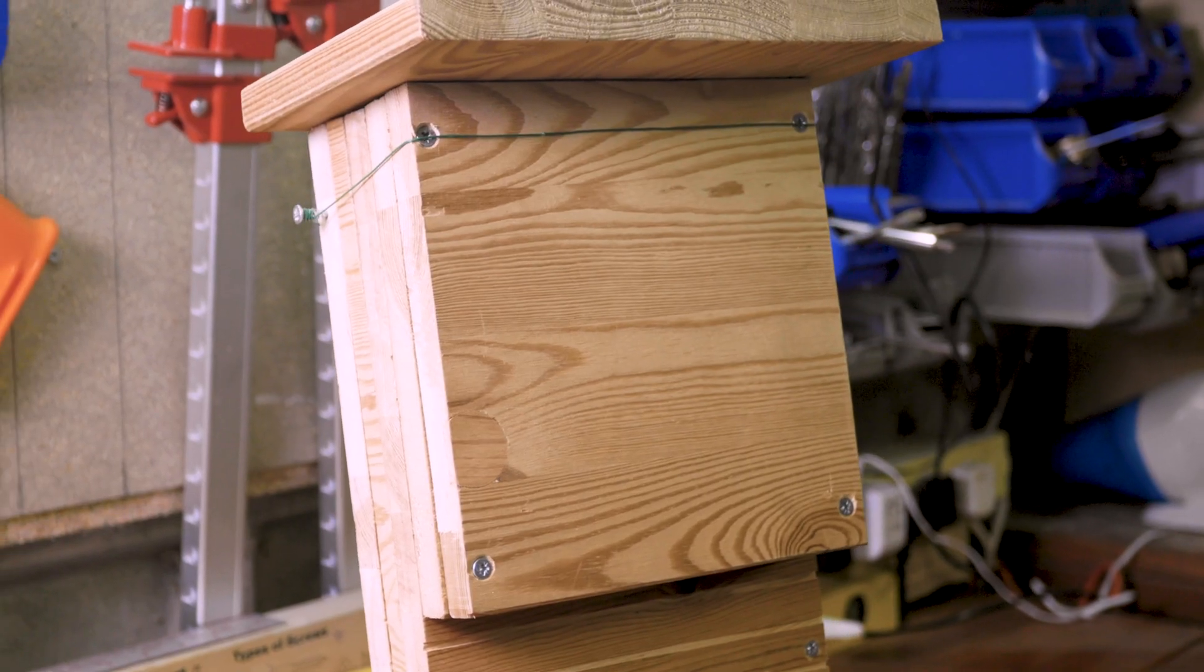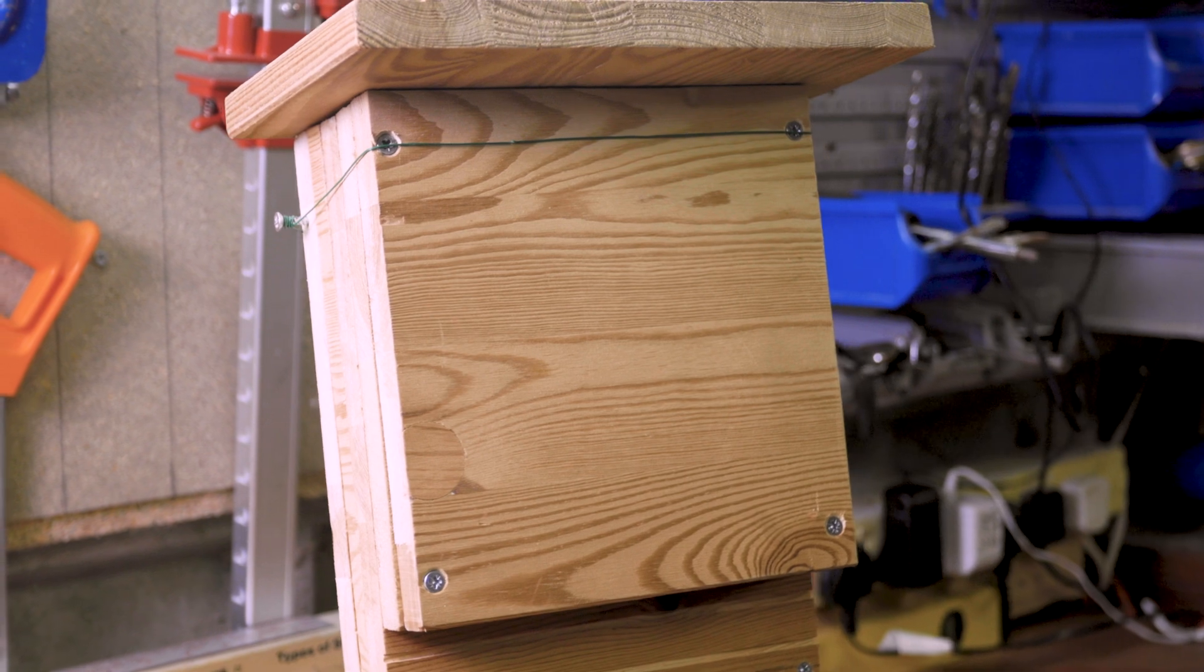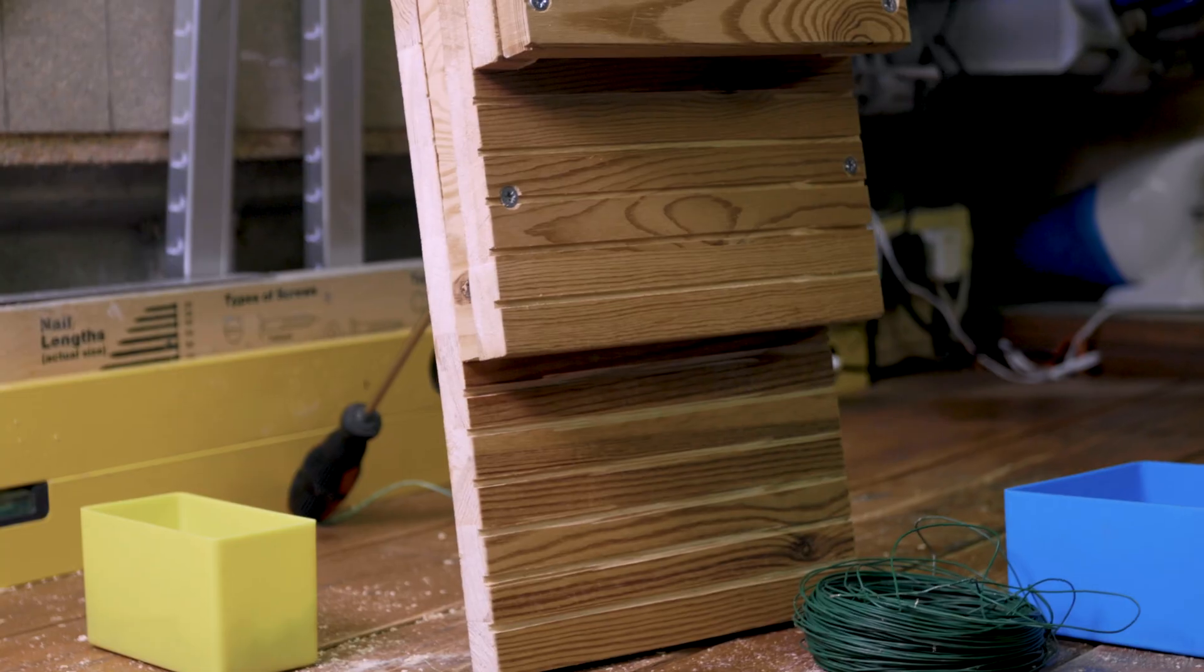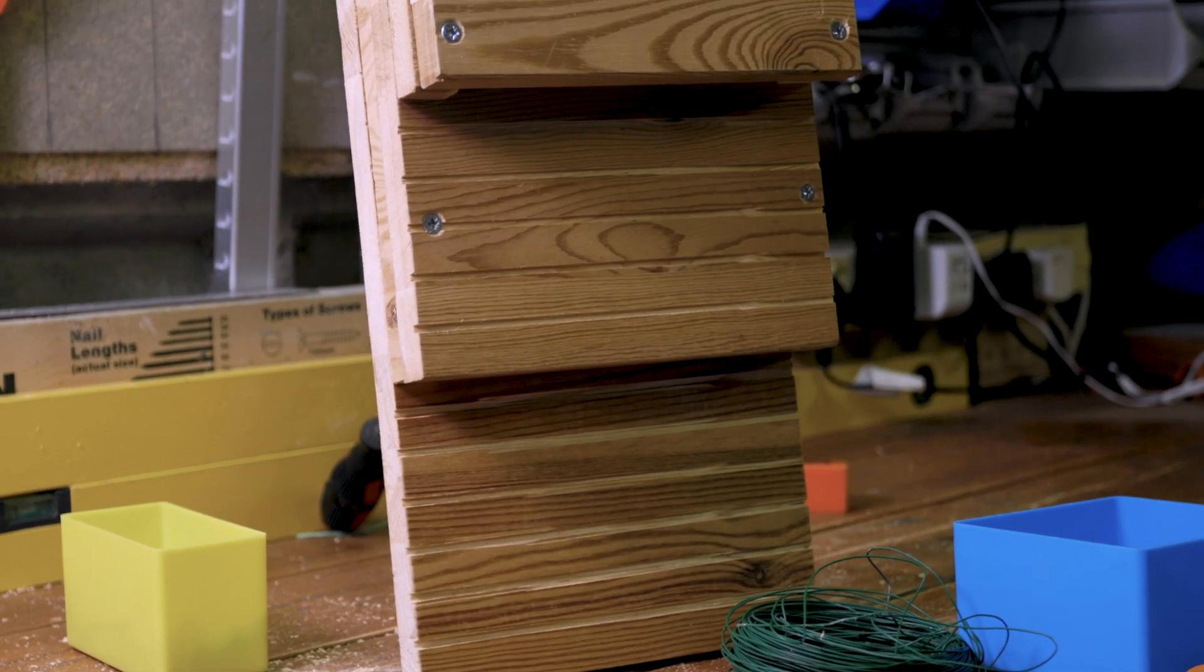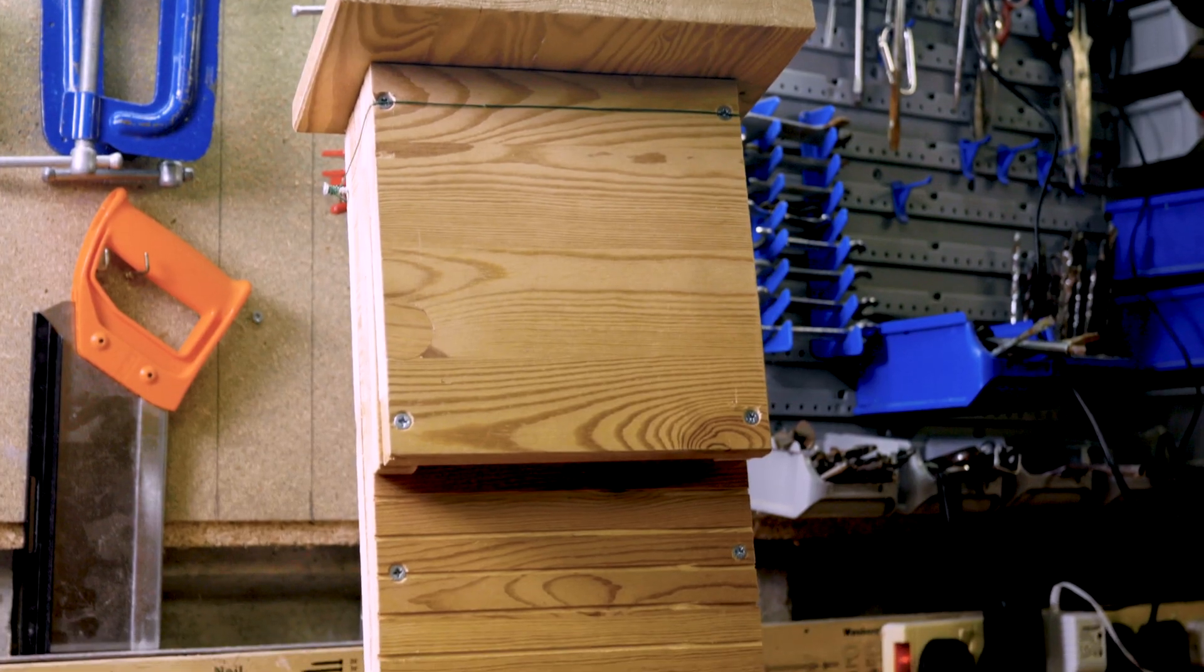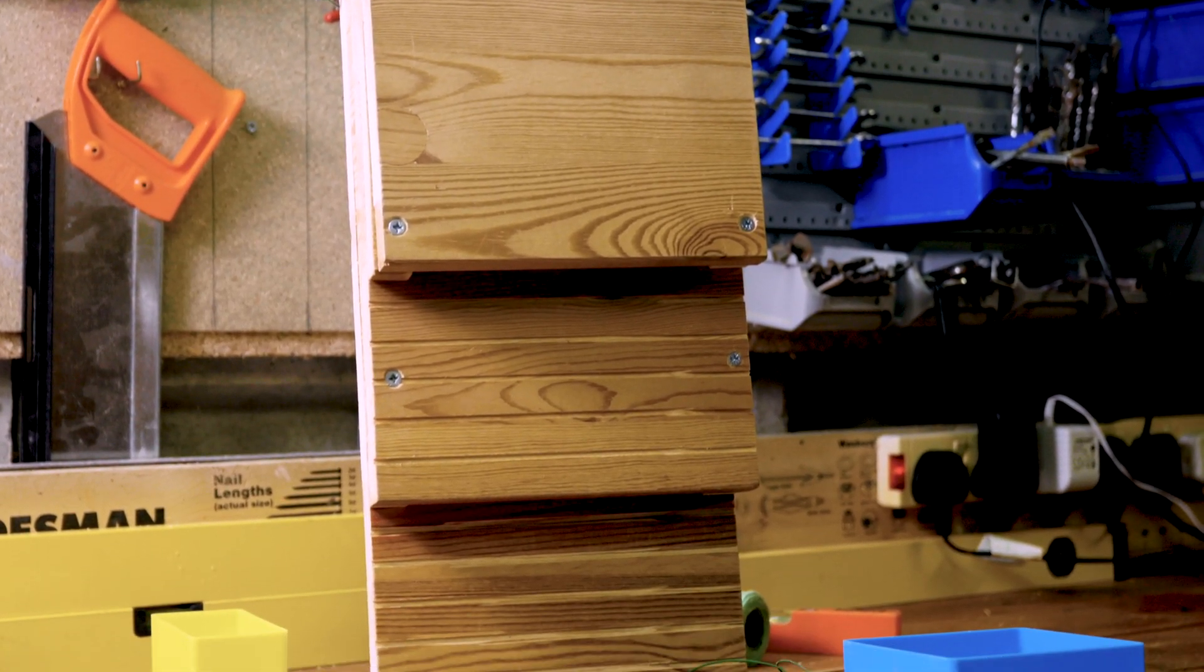The main thing to remember is a good box should be draft proof. Bats, like your elderly relatives, don't like a draft making them cold. So a stable temperature is what you're aiming for.